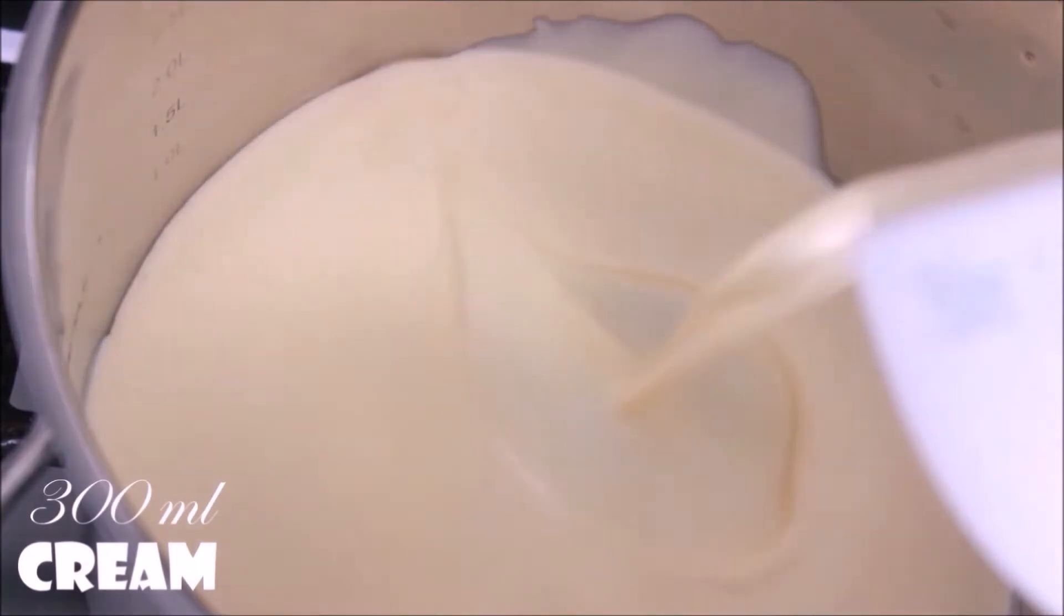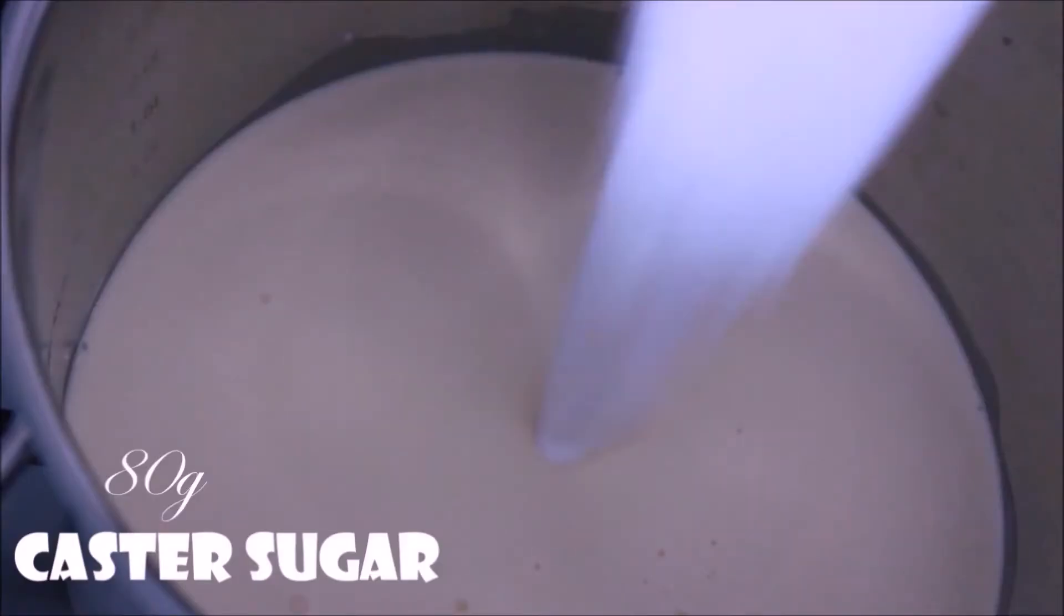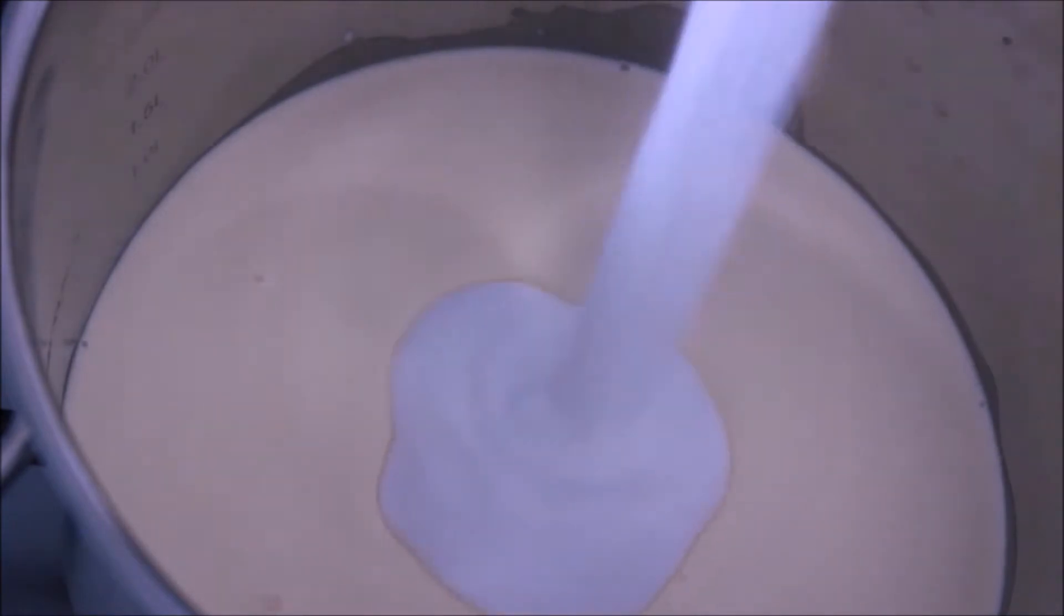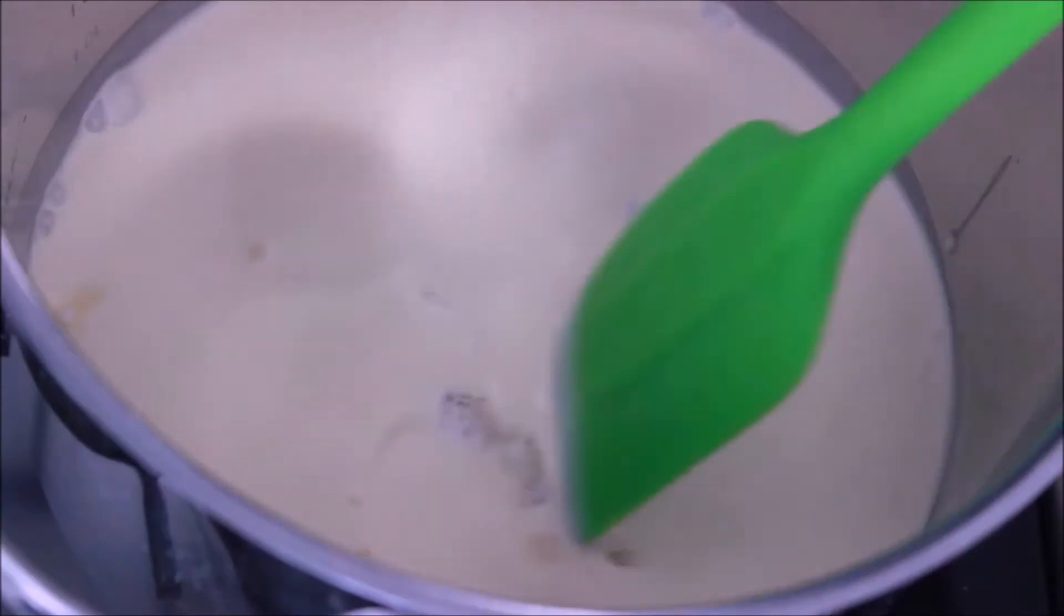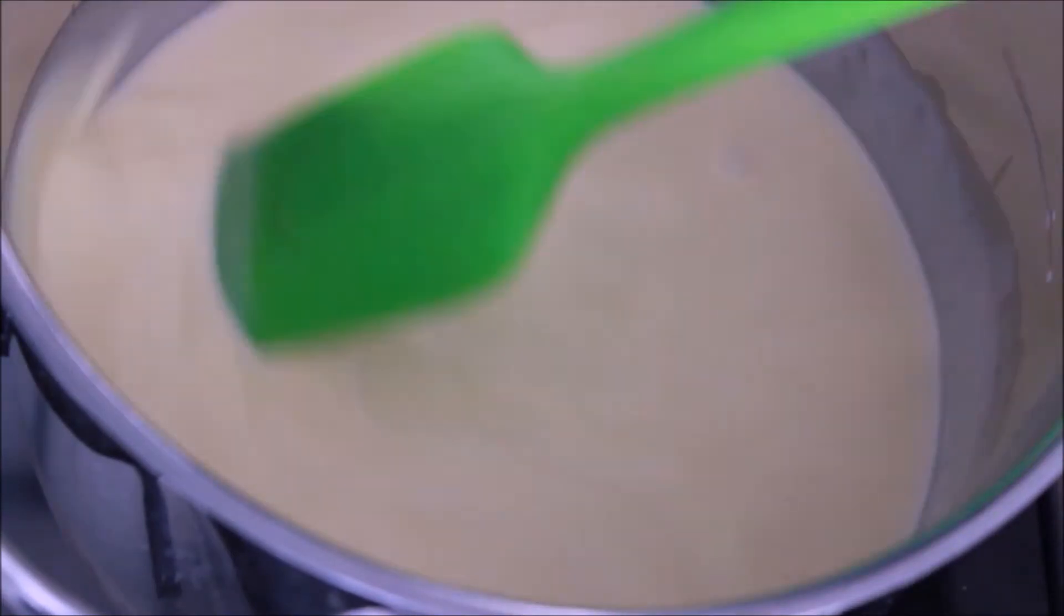In a saucepan put 300 ml of cream and 100 ml of milk, also 80 grams of caster sugar and a quarter of a teaspoon of vanilla extract. On a low heat, mix everything until the sugar has dissolved.